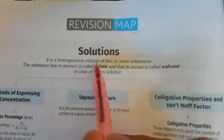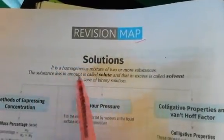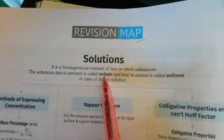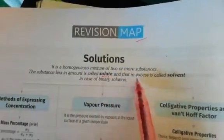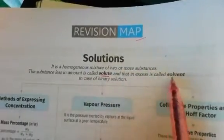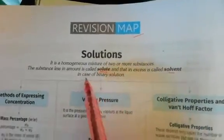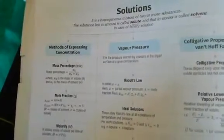As the name of the chapter is 'Solution', it is a homogeneous mixture of two or more substances. The substance present in lesser amount is called solute and the substance present in excess amount is called solvent. In case of a binary solution, the chapter is divided into four basic parts. Number one is methods of expressing concentration — that is mass percentage, mole fraction,